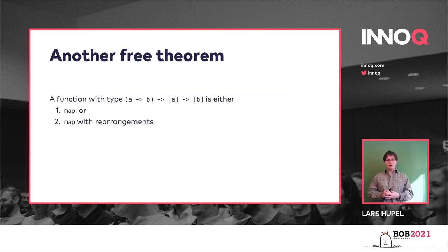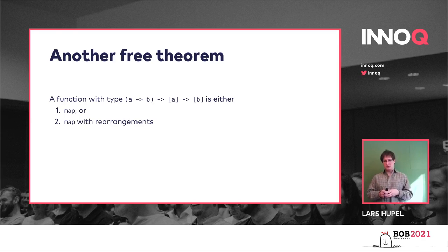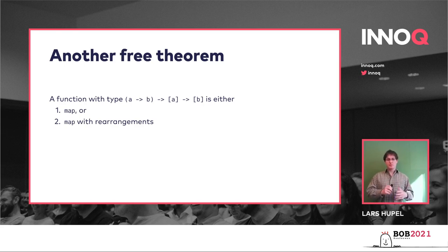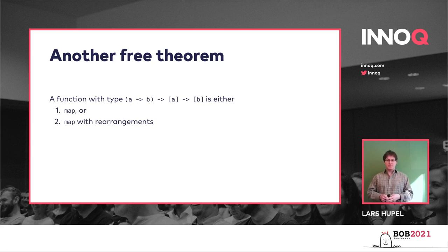Here's another free theorem. If you have a function with this type — which you might recognize — we can prove that this function either maps directly (it is the map function as defined in the library), or it maps with rearrangements like a reverse, or it always returns the empty list. But crucially, it cannot return any other elements than map would — it cannot invent any new Vs on the spot.